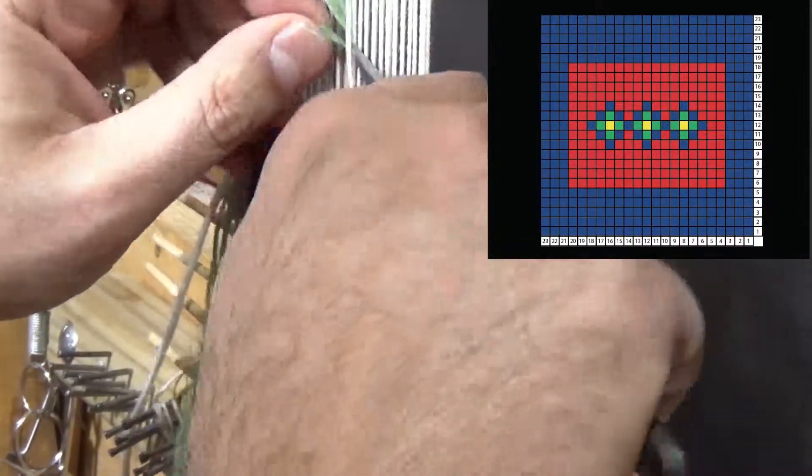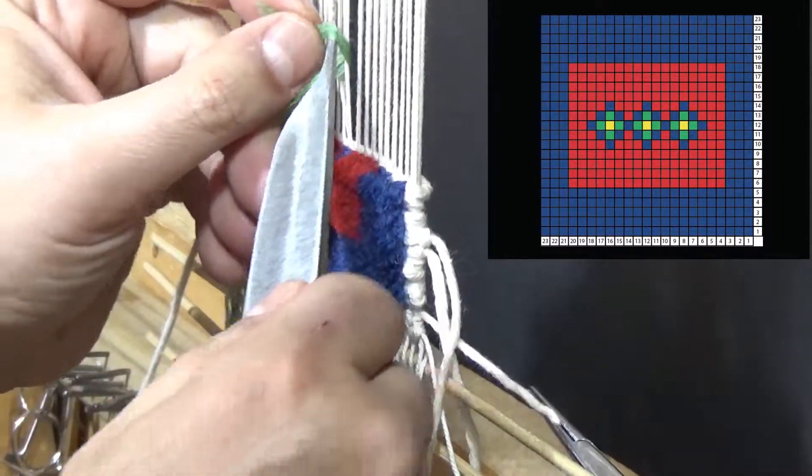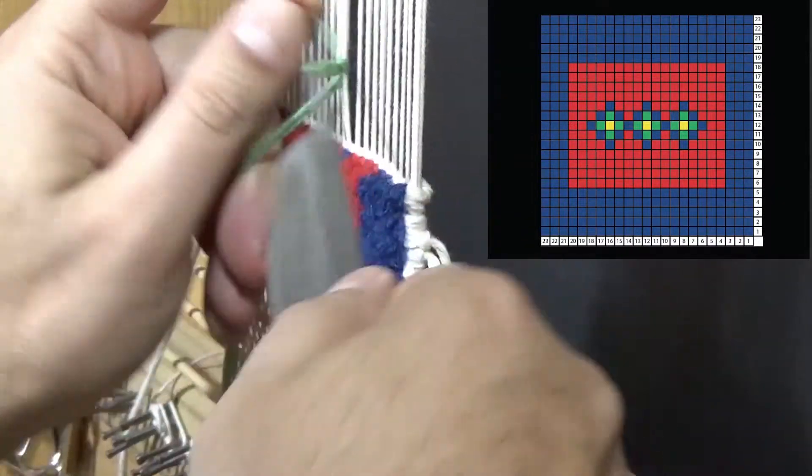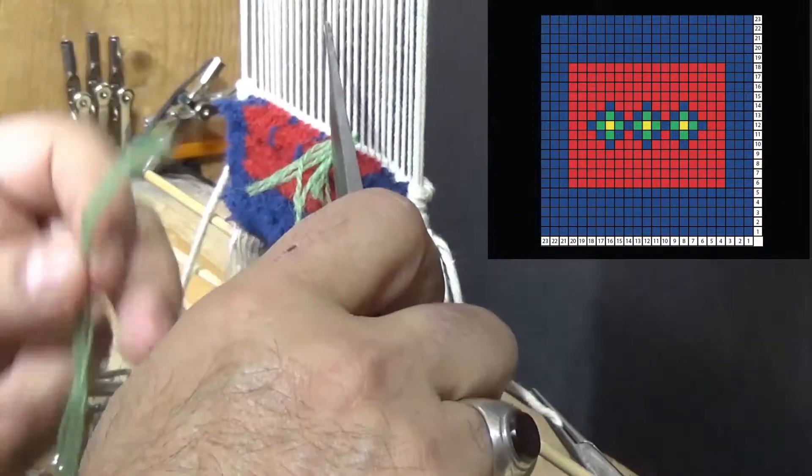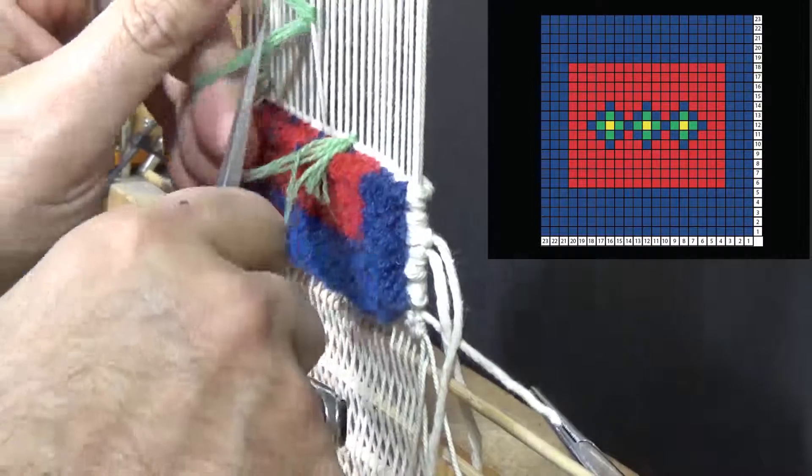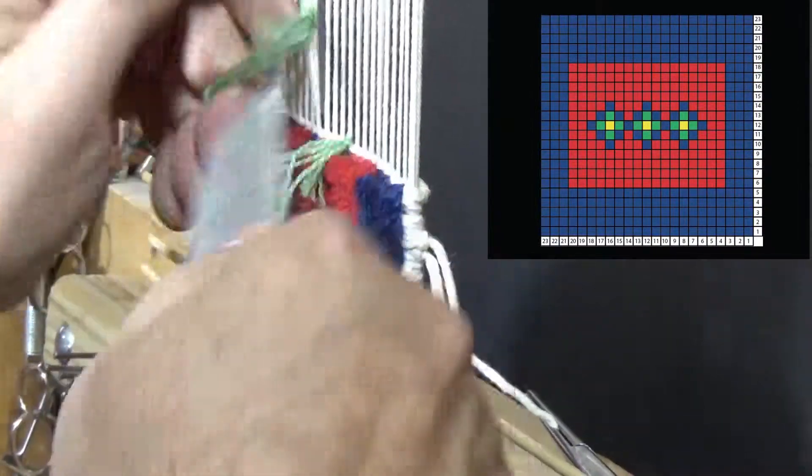Color change is a critical part of rug weaving as you can imagine. A weaver is making constant decisions on what colors to use and where. The more complicated the design, the more complex the decision making process becomes.